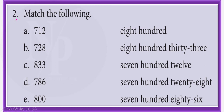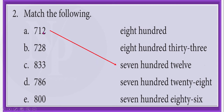Now let us come to question number 2 in this exercise. Here we have to match the following. In one column, numerals are given, and in the other column, the number names are given, but not in proper order. So we have to look at the number and match it with the correct number name. So what is the number name given in A? It is 712. We should search for 712 here. So here we have 712, and we have to match these two by drawing a line from the numeral to the corresponding number name.